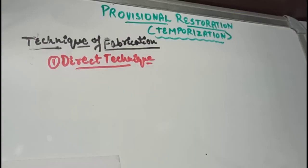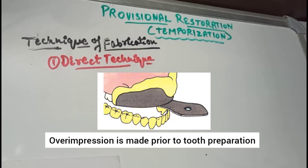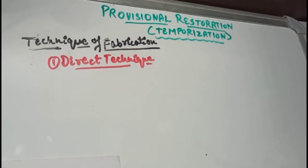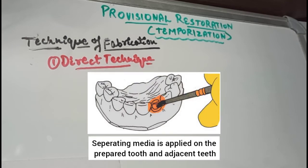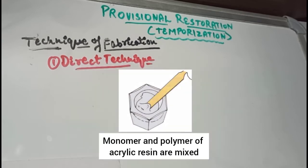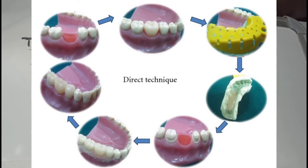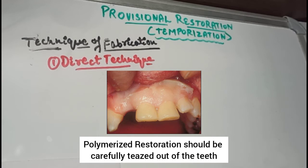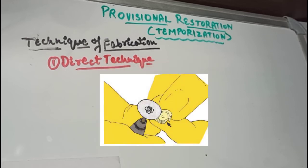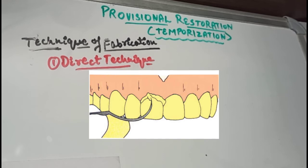For the direct technique, an over-impression of the patient's mouth is made using addition silicone impression material prior to tooth preparation, then trimmed and preserved. After tooth preparation, a separating medium is applied on the tooth and adjacent teeth. The monomer and polymer of the resin material are mixed, loaded into the over-impression, and immediately placed in the patient's mouth before polymerization occurs. The resin is allowed to polymerize intraorally for about 10 minutes, then the over-impression is removed and the polymerized restoration is carefully teased out. Voids are repaired, the restoration is trimmed, finished, polished, and cemented.